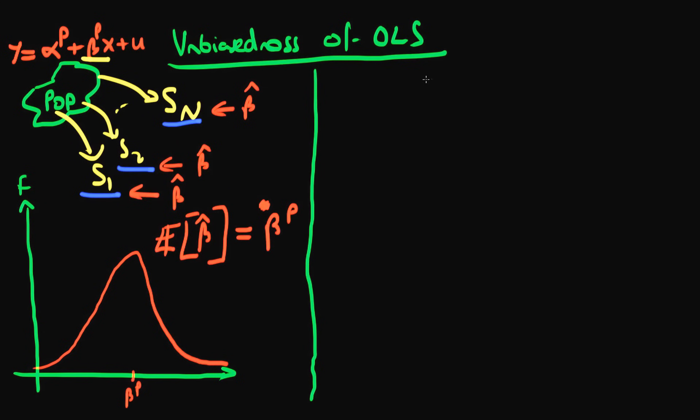Okay, so let's think about a model. I have a bivariate population process which is yi equals alpha p plus beta p xi plus ui. So this is a bivariate model whereby I've only got one independent variable explaining my variation in my dependent variable.